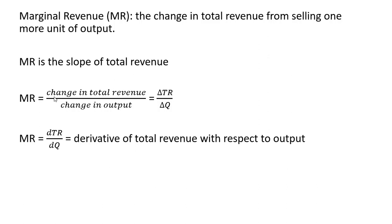And in terms of the formula, we can think of it as change in total revenue divided by change in output, or just in shorthand notation, delta TR divided by delta Q, where delta represents change in.